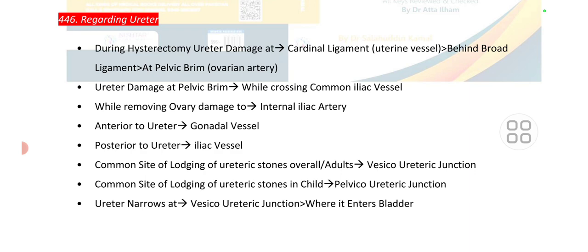The common site of lodging of a ureteric stone overall in adults is VUJ — vesico-ureteric junction. The common site of lodging of a ureteric stone in children is PUJ — pelvi-ureteric junction. The ureter narrows at the vesico-ureteric junction where it enters the bladder.